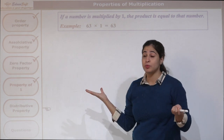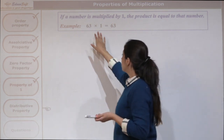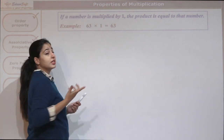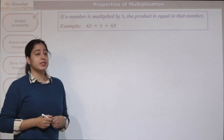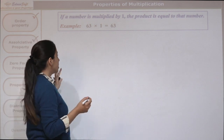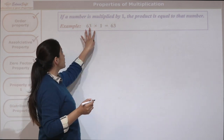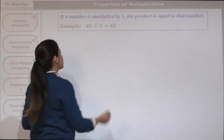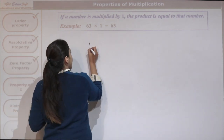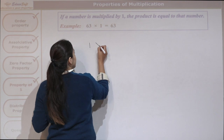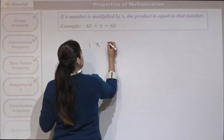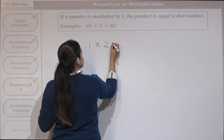...then what happens to the product? 63 times 1 is 63. So it is equal to the same number.